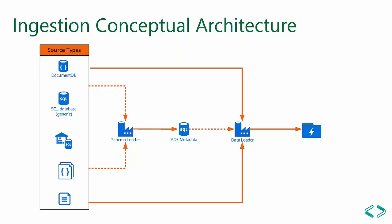The data loader pipeline is the third activity. Its job is to look at the metadata model — a stored procedure determines which tables need to be copied based on configuration — then goes back to the source and performs the copy into the data lake. So the flow is: get the schema, load the schema into the model, then the data loader looks at the model to actually go and retrieve the data.